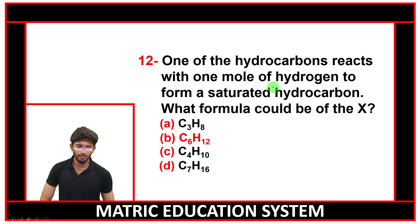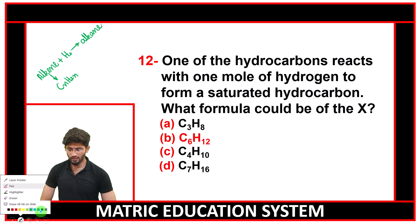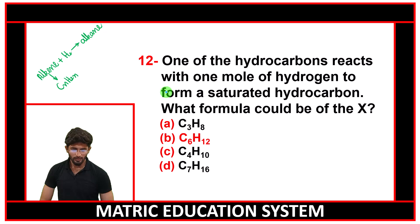One of the hydrocarbons reacts with one mole hydrogen to form a saturated hydrocarbon. What is the formula of X? When alkenes react with 1 mole hydrogen, they form saturated hydrocarbons, alkanes. The general formula is CnH2n. You can see that in these compounds, CnH2n is being followed by option B.